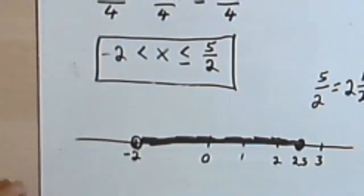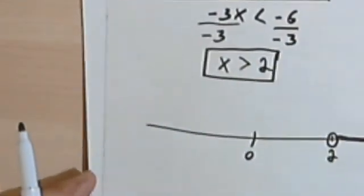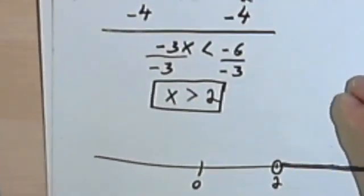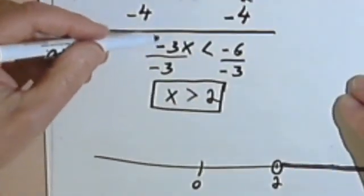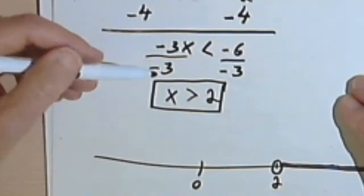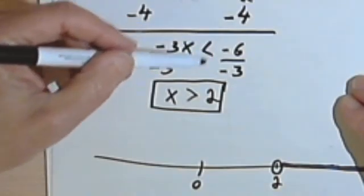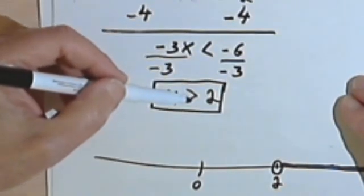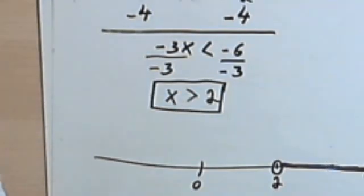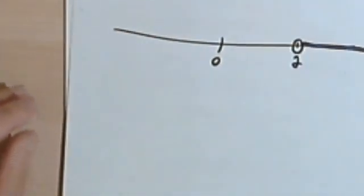And that's about it. Once again, the most important thing to remember is that if you multiply or divide by a negative, as I did over here, your inequality sign is going to change direction. Okay? That's it for now. Take care, I'll see you next time.